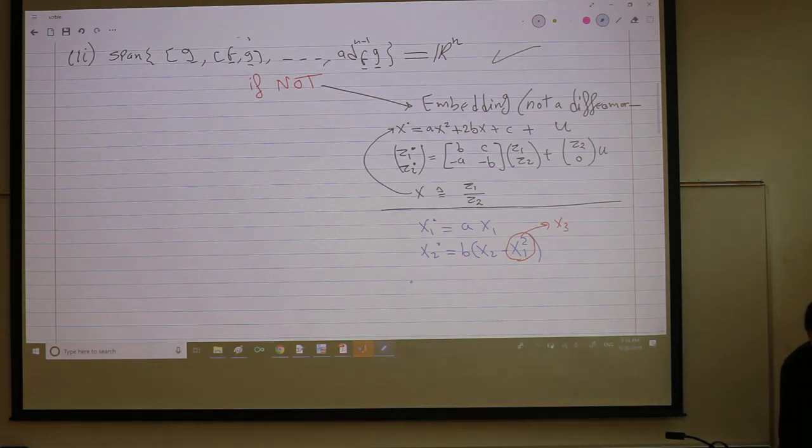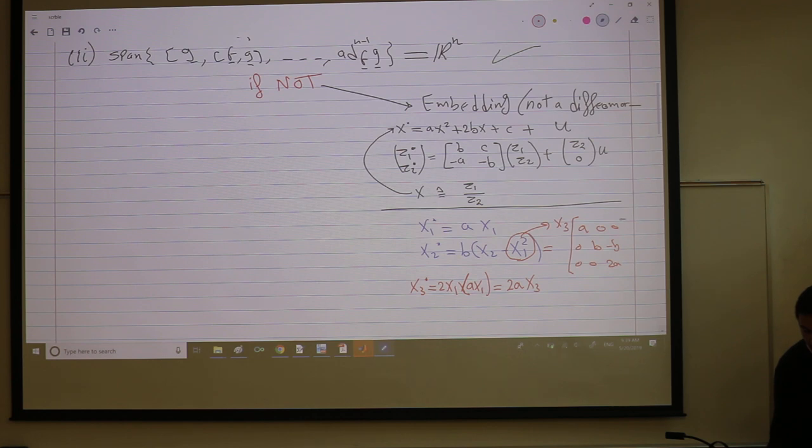And I can say, here is x3 dot, which is 2x1 x1 dot, right? x1 dot is a x1, so this is 2a x1 squared. And x1 squared, like I just said, is just x3. So in the new state space, this is just a linear term, linear system: like a, zero, zero; and zero, b, negative b; zero, zero, 2a, in the states x1, x2, x3, right?